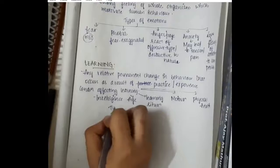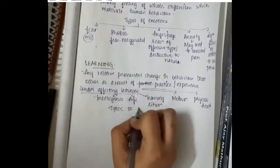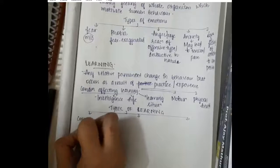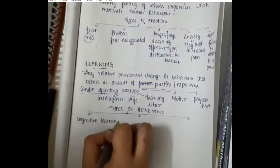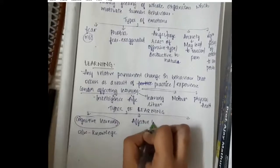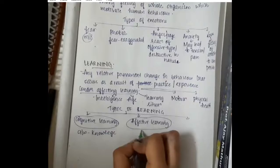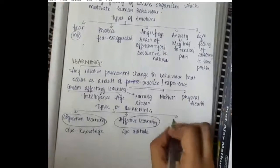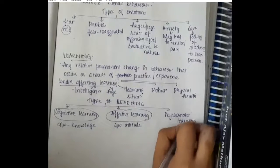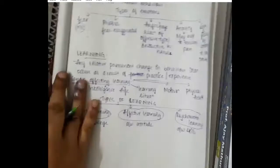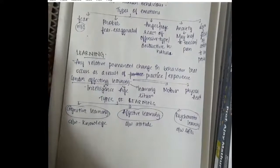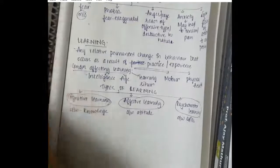The types of learning are of three types: cognitive learning, affective learning, and psychomotor learning. Cognitive learning is associated with knowledge, affective learning is associated with attitude, and psychomotor learning is associated with skills.